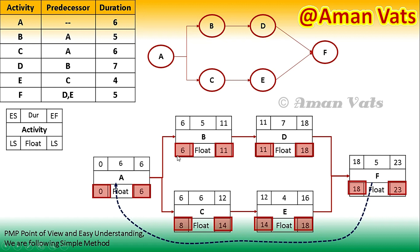This is a very important point to remember: when using the backward pass coming back, we use the least value. When using the forward pass going forward, we use the greatest value. If you recall, going forward from 18 and 16 we used 18. So we have now calculated our late start and late finish using the backward pass method.